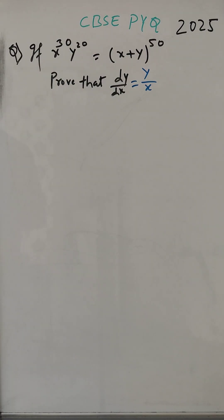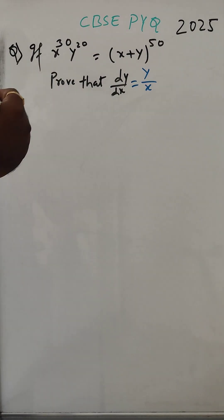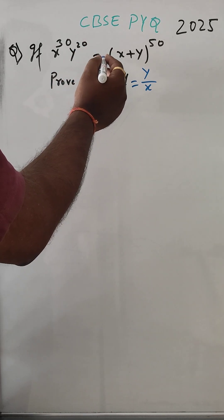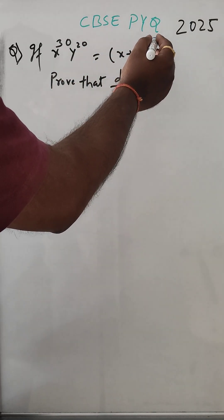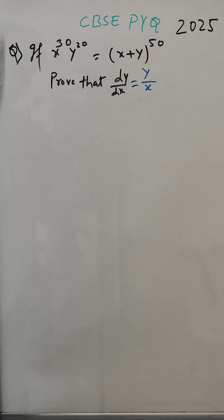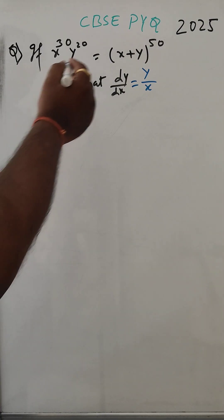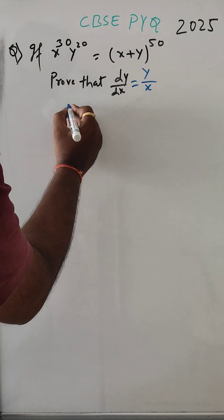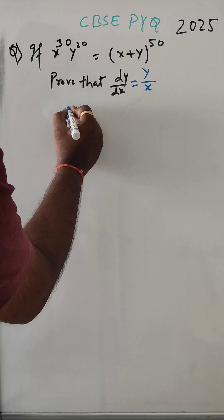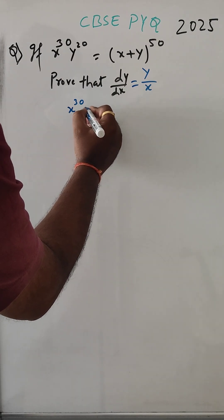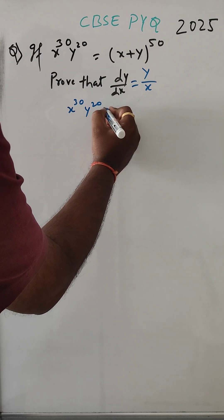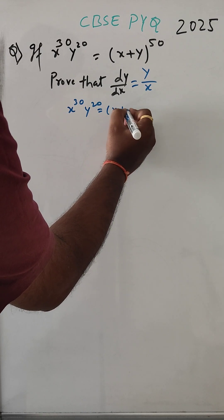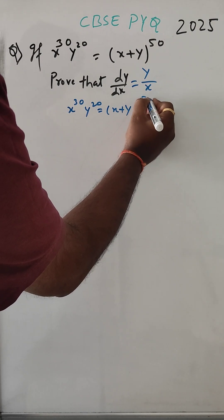Hello, let us solve this problem. We have x to the power 30 times y to the power 20, is equal to x plus y whole to the power 50. We have to prove that dy divided by dx is equal to y by x. So, what is given? x to the power 30 and y to the power 20 is equal to x plus y whole to the power 50.